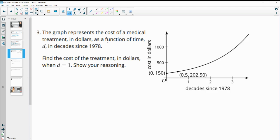Number three, the graph represents the cost of medical treatment in dollars as a function of D decades since 1978. Find the cost of the treatment in dollars when D equals one. So if we look on this graph, they give us the initial cost at zero to 150. So the initial cost is $150.